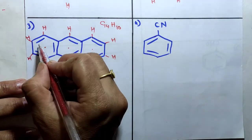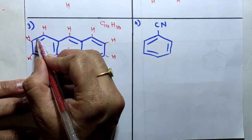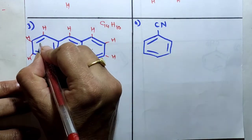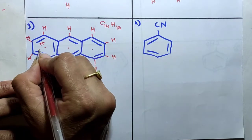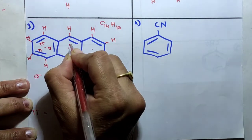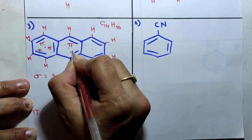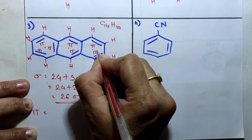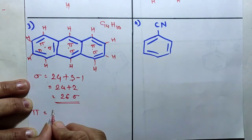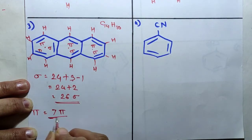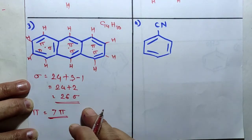Now calculating pi bonds in anthracene. For double bonds, 1 is sigma and the remaining is pi. Counting the double bonds: there are 7 pi bonds present in anthracene. So anthracene has 26 sigma bonds and 7 pi bonds.